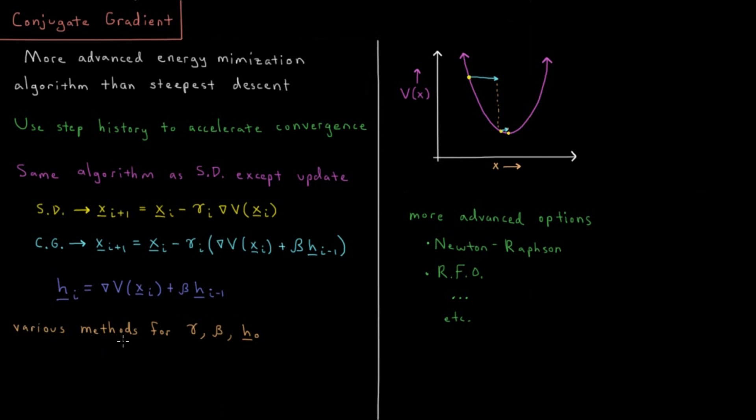There are various methods for choosing what these values of gamma are, for choosing what the value of beta is, for how strongly you mix in the previous steps, and for choosing what your step alteration vector is for the initial step. There are many algorithms which are called preconditioned, where you have to do some type of initial setting this vector to something based off of all these values.